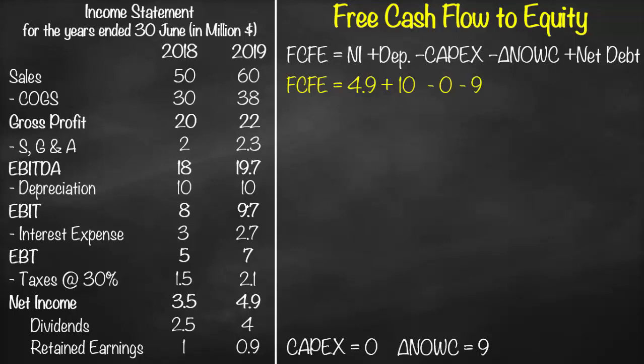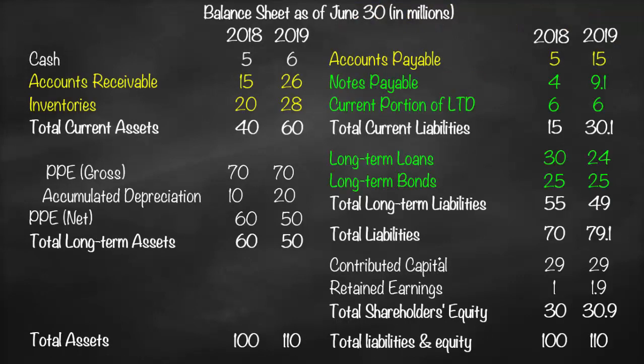Now we calculate net debt. From the balance sheet, net debt equals non-operating liabilities at time t minus non-operating liabilities at the previous period. This is the opposite of what we did with net operating working capital — here we use non-operating items. Looking at both current liabilities and long-term liabilities, non-operating items are those used indirectly in operations, meaning they incur interest or a return.